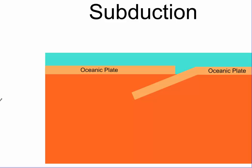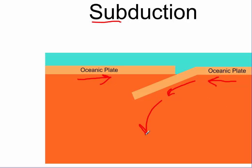The second type of boundary is a subduction zone. A subduction zone occurs when two plates come together and one slips underneath — like submarine or subway, it goes below. This plate ducks down below, driven by convection currents in the asthenosphere.